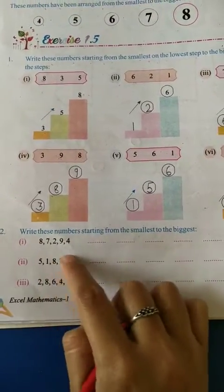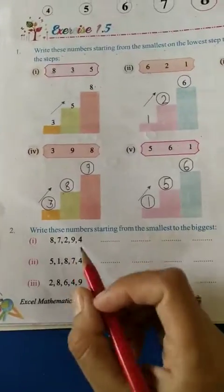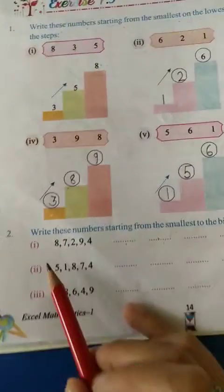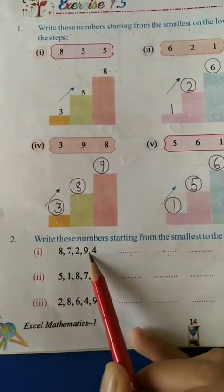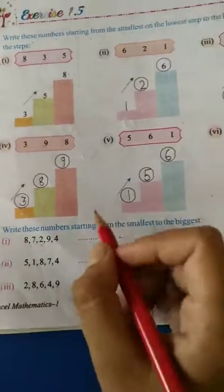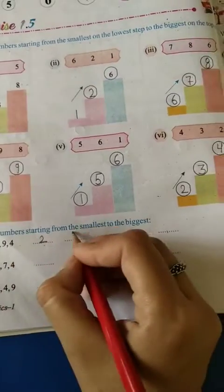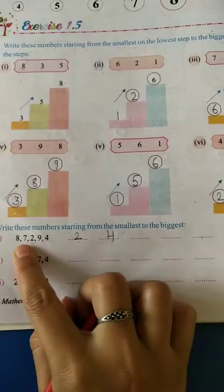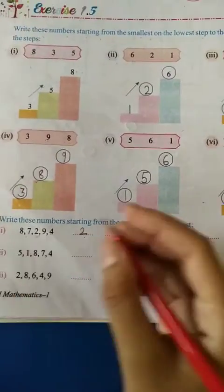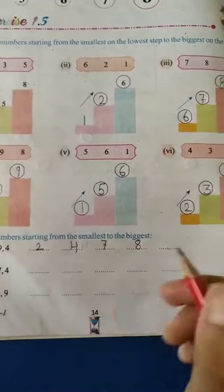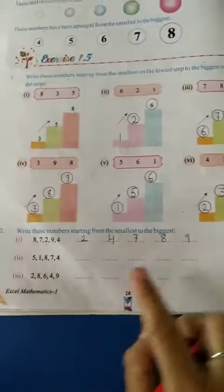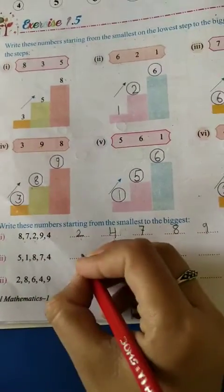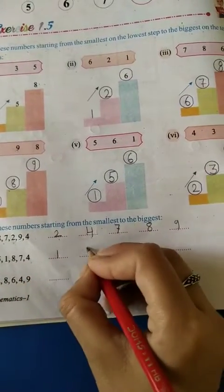Next question: write the numbers from smallest to biggest. The numbers are 7, 2, 9, 4. The small number is 2, then 4, then 7, then 9.